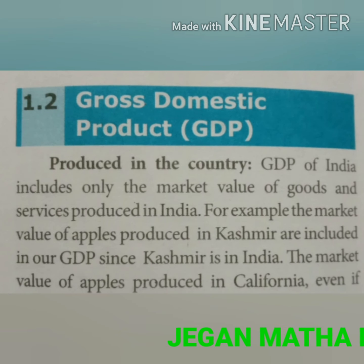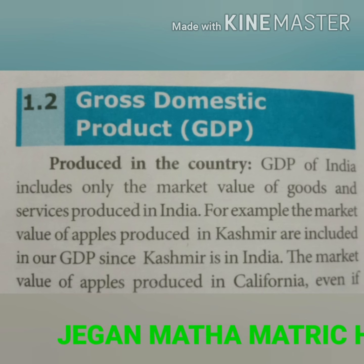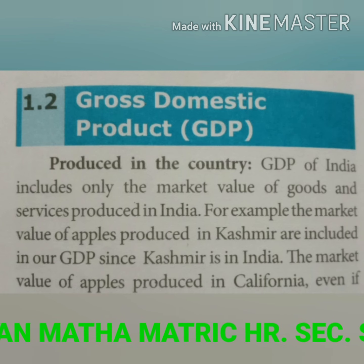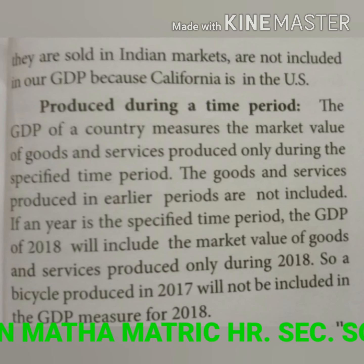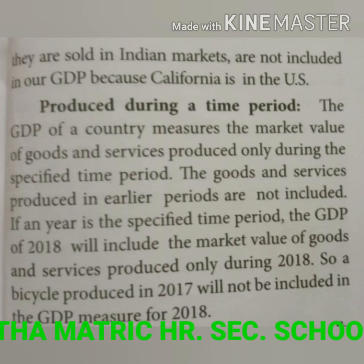Gross domestic product of India includes only the market value of goods and services produced in India. For example, the market value of apples produced in Kashmir are included in our GDP since Kashmir is in India. The market value of apples produced in California, even if they are sold in Indian markets, are not included in our GDP because California is in the US.